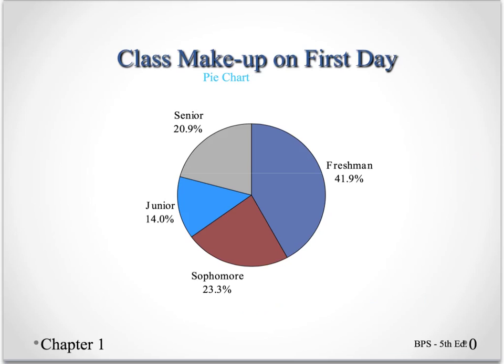Here's another way to look at that same exact data — we can look at it in a pie chart. We've taken a circle and taken a portion of that circle for each of the classes — freshmen, sophomores, juniors, and seniors — shaded each one a different color. They are proportional, meaning 41.9% of this circle represents the freshman class.